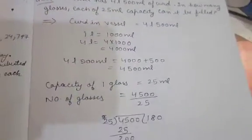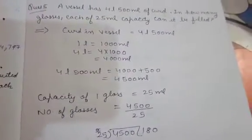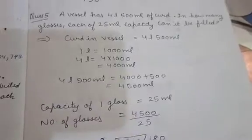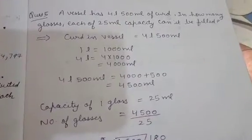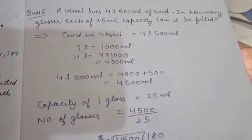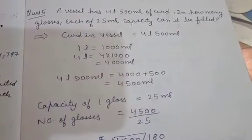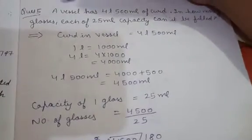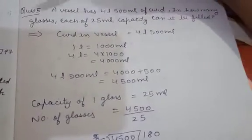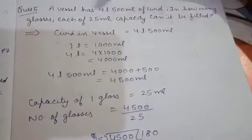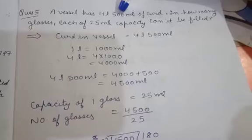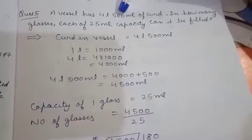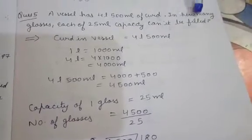Questions 2, 3, and 4 students will try on their own — I will share the notes in a PDF. Now question 5: a vessel has 4 liters 500 milliliters of curd. How many glasses, each of 25 milliliter capacity, can be filled from it?